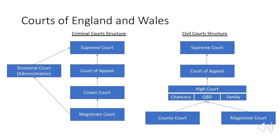Next you've got the civil court structure. You've got the County Court and magistrates that deal with generally minor civil disputes. Further up the hierarchy you've got the High Court, split into three sections. The QBD deals with contracts and wrongs against a person, for example defamation. Then you've got the Family Court that deals with divorce and custody cases. Then you've got the Chancery, which deals with business disputes and property.